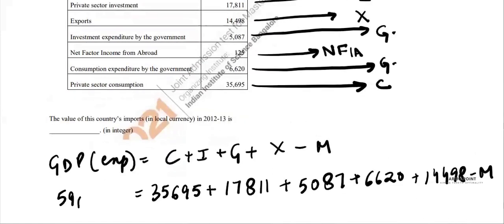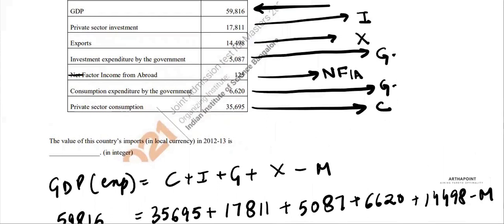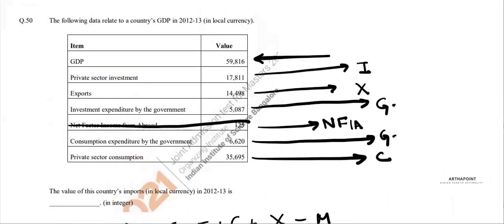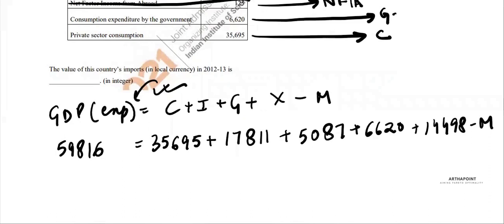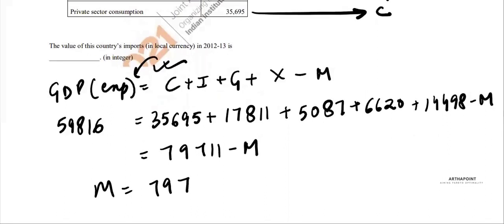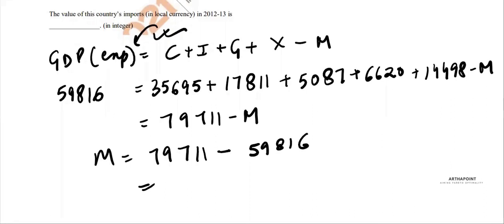GDP is given as 59816. NFIA is not used here because this formula uses GDP — NFIA is only used to convert GDP to GNP, and we don't need GNP here. So adding 35695 + 17811 + 5087 + 6620 + 14498 gives us 79701. Therefore M = 79701 - 59816 = 19895. This is the answer.